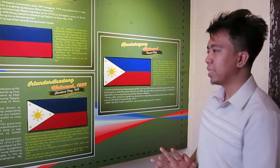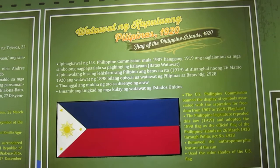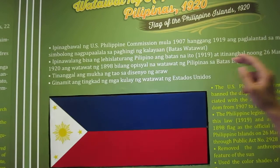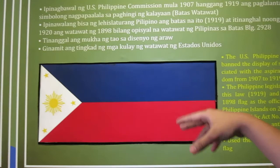But in 1920, the flag underwent a different design with a darker shade of blue, because they used the color shades of the U.S. flag. They also removed the face of the sun and the seal in the middle to break from the revolutionary past. But in 1936,